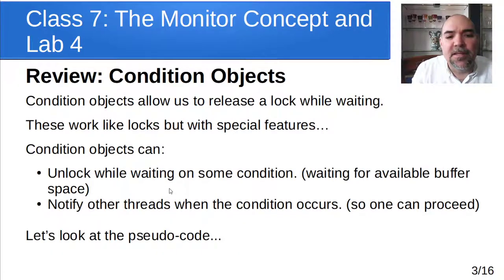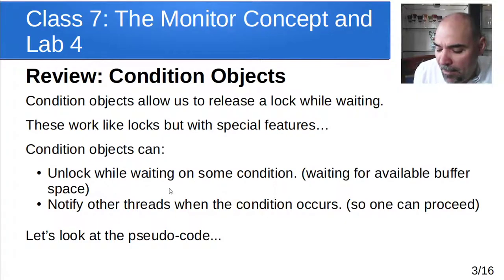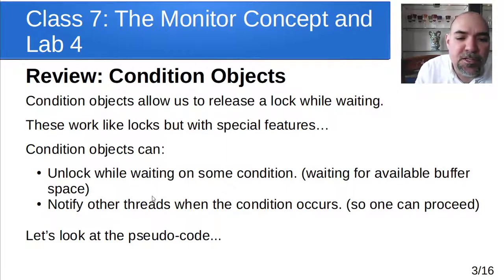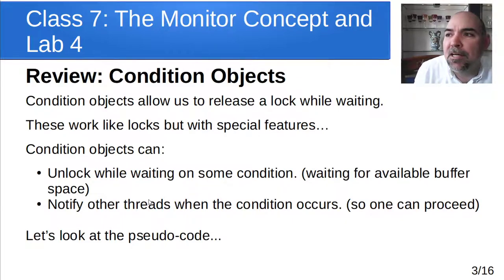That's where condition objects come in. Condition objects are like a lock, except they have special features that allow us to release the lock while we're waiting. And as soon as we stop waiting, we acquire the lock again. So condition objects work a lot like locks, but they can unlock while waiting on some condition, and then they can be notified by another thread when that condition is met, and then try to acquire the lock again.